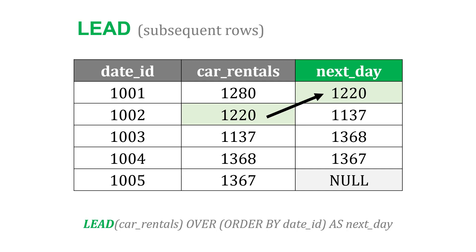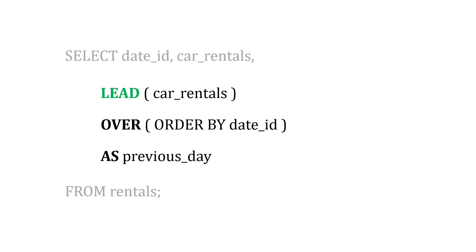All I'm going to do is change lag to lead. So lead the car rentals over order by the date ID, so those are in the right order from first to last day, as next day. Here's what that would look like inside the select statement: select the date ID and the car rentals, and then the lead as the next day from the rentals table.